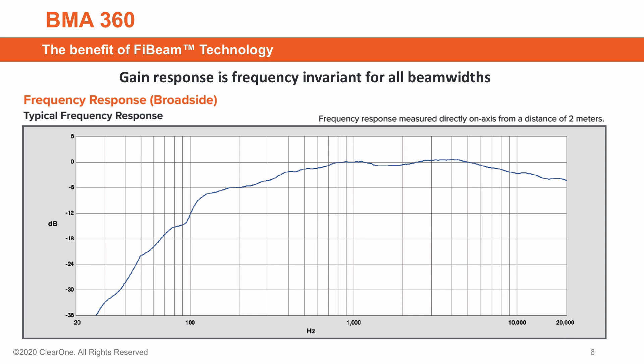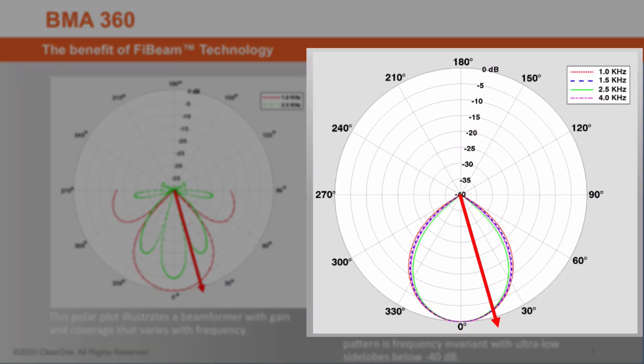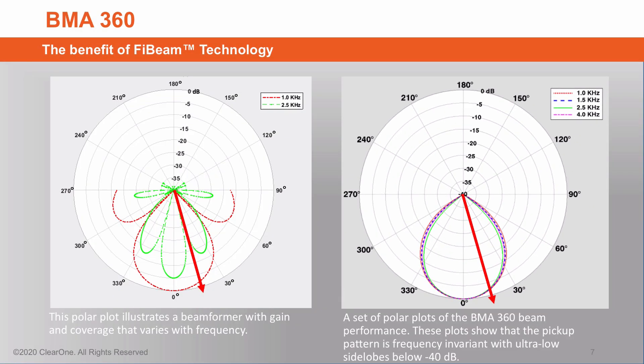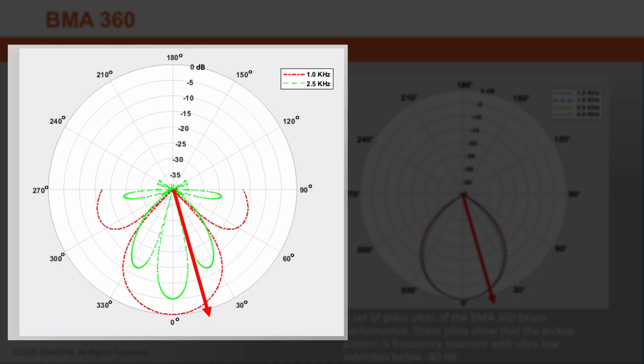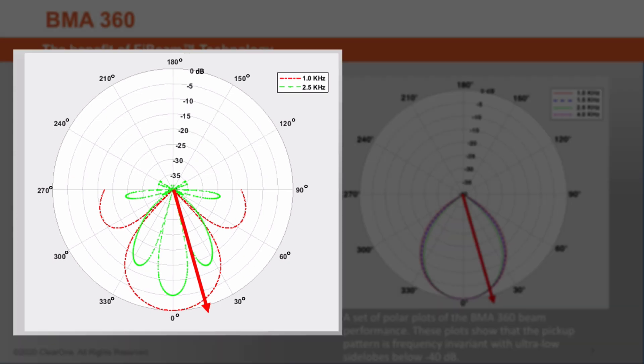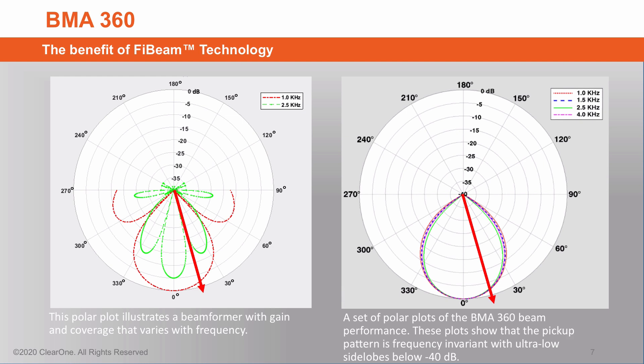This graph shows the frequency response when measured on axis — that is the zero degree point of the beam. However, what happens when it is measured just a little off axis but still in the coverage area of the beam? On the right with the BMA360, the frequencies are invariant — they maintain the same gain at all frequencies. On the left with competitive beamformers, there is a significant difference in gain at different frequencies — as much as 15 to 20 dB in this graph. That results in very unnatural sounding audio in different areas of the beam.